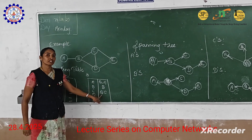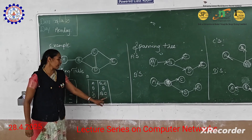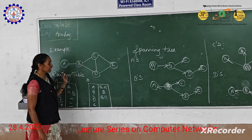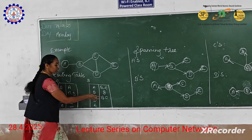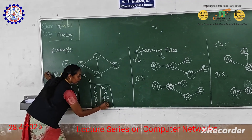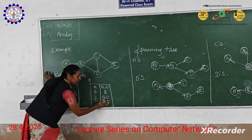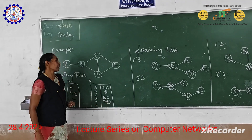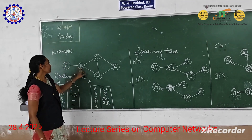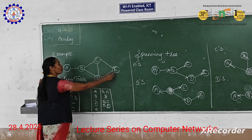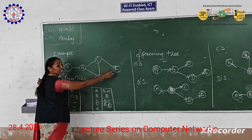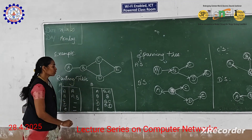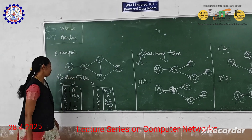Here B is the source node and C is the destination node. Then from B to D, what is available? So you can write as B, C and E. Here B is the source node and B is the destination node. Then I have to see the E node. In B to E, there is flow directly between B and E, so you can simply write as type 1.